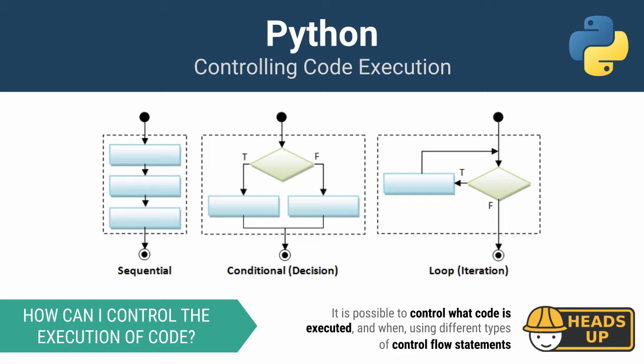The three families are: sequential, conditional, and what's called iterative — sometimes referred to as looping. Depending upon what you want to do in your program, you'll use different control flow statements.